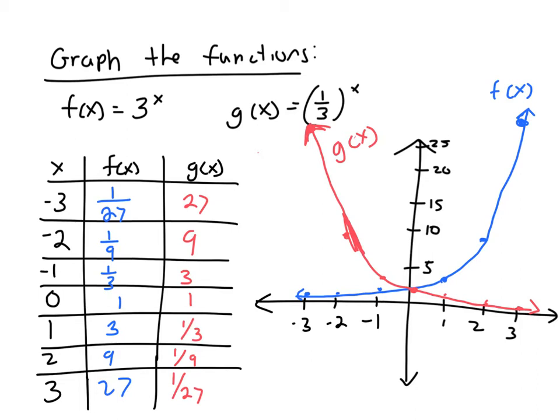So one thing I want you to notice is that these are reflections of each other. If you were to reflect f(x) over the y-axis, you would get g(x). Why is that? Well, g(x) equals (1/3)^x, which is the same thing as 3^(-x), right?